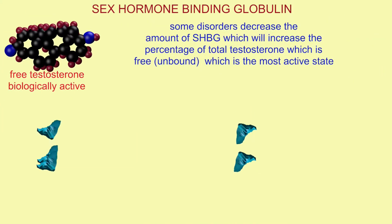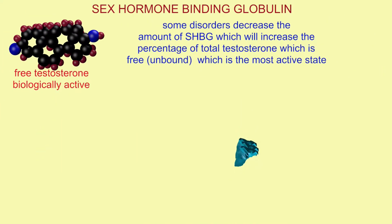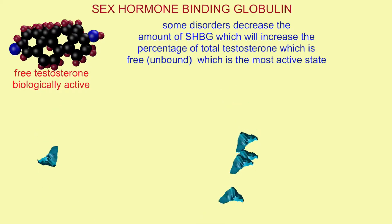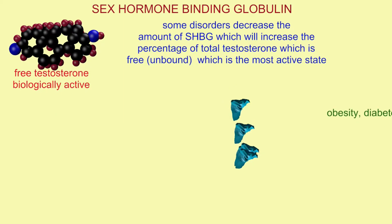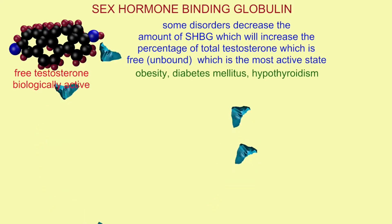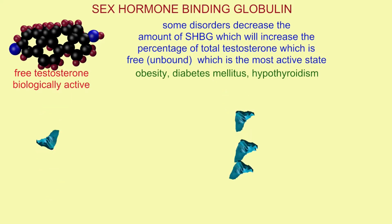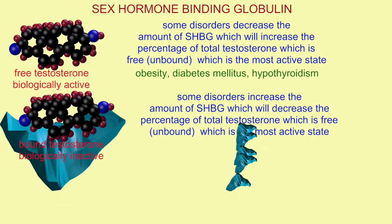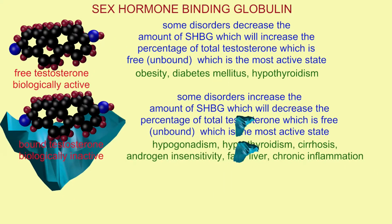The amount of testosterone floating in plasma is known as free testosterone. This, along with that bound to albumin loosely, is referred to as the portion which is biologically active. Some disorders decrease the amount of SHBG, which will then increase the percentage of total testosterone which is free and unbound in its most active state.